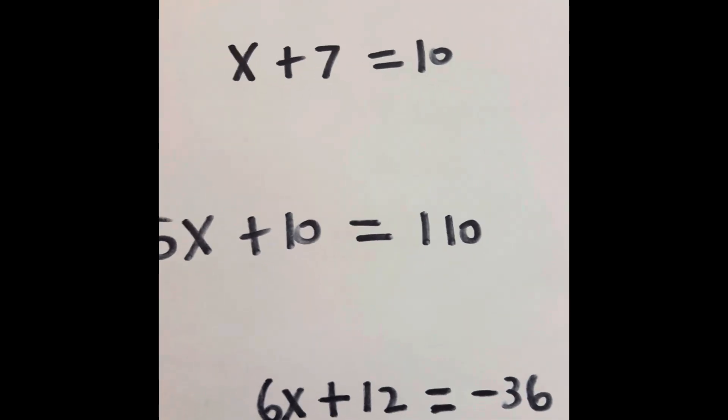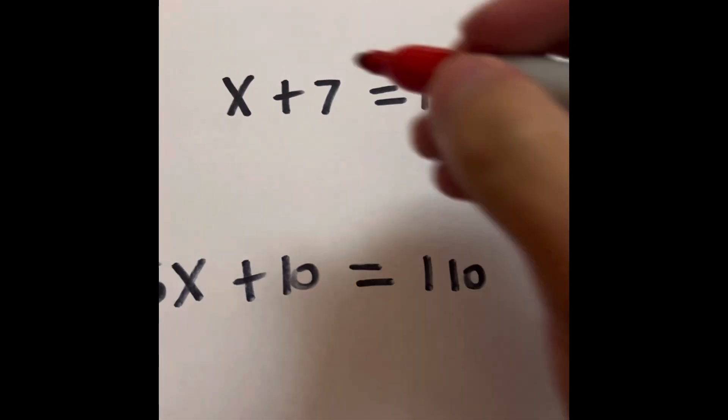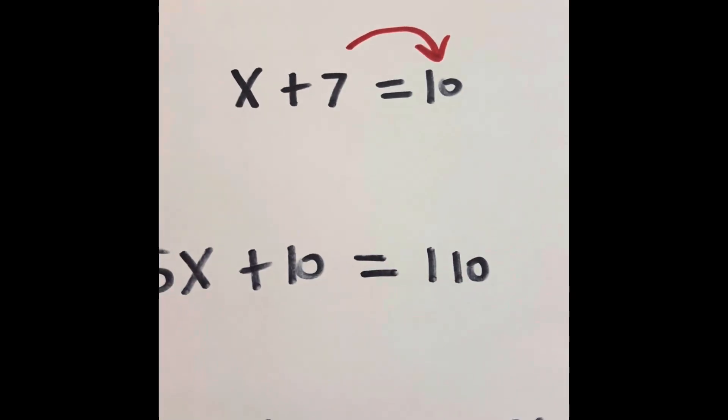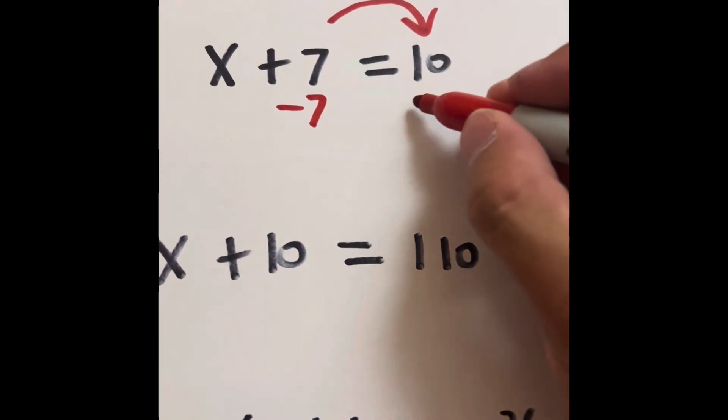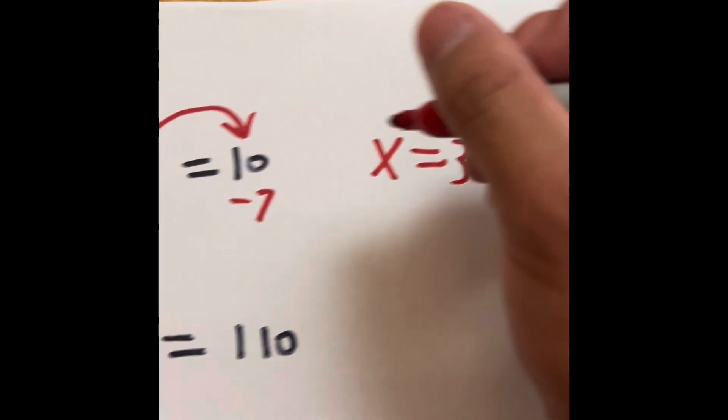Since we have x plus 7 equals 10, that 7 has to go to the other side because we want to have a variable on one side and a number on the other side. Minus 7, minus 7.